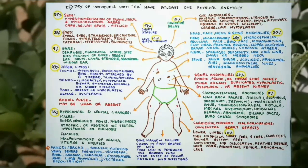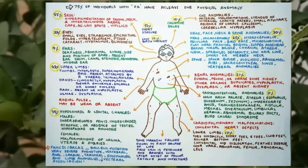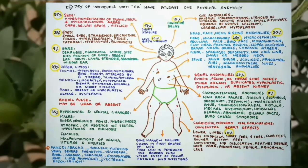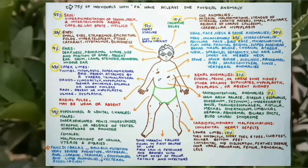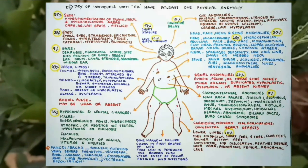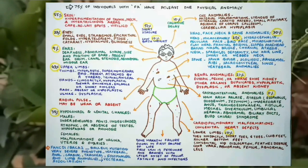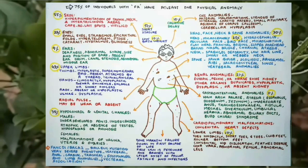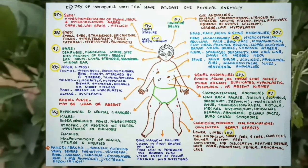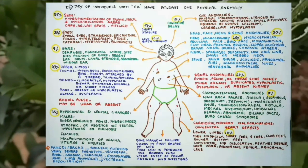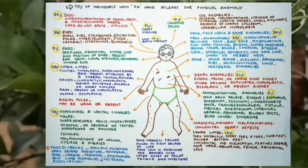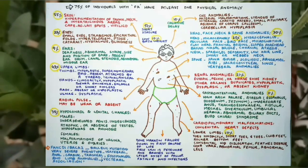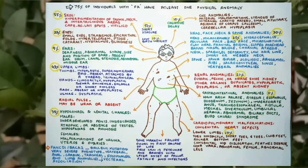75% of individuals with Fanconi Anemia have at least one physical anomaly. Skin abnormalities are the most common, present in 55% of cases, including hyperpigmentation of the trunk, neck and intertriginous areas, as well as cafe-au-lait spots and vitiligo. Short stature is present in 51% and low birth weight in 10%. Upper limb anomalies are present in 43% of cases, including absent or hypoplastic radii. Thumbs may be hypoplastic, supernumerary, bifid, absent or attached by a thread.